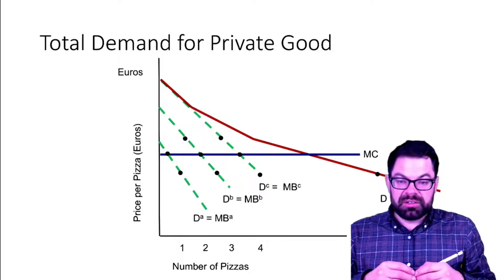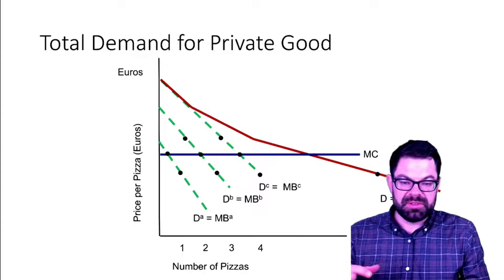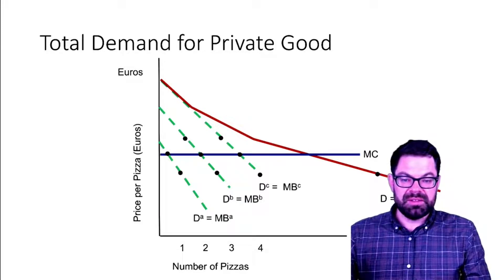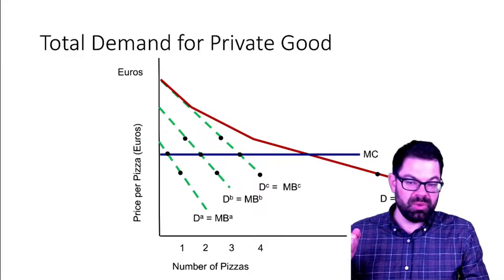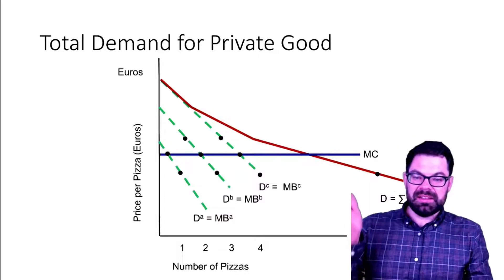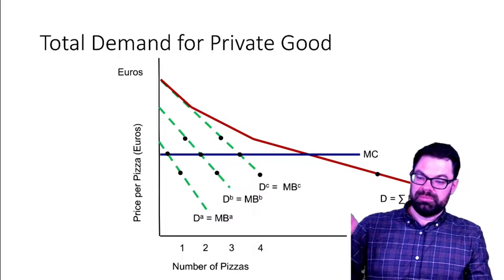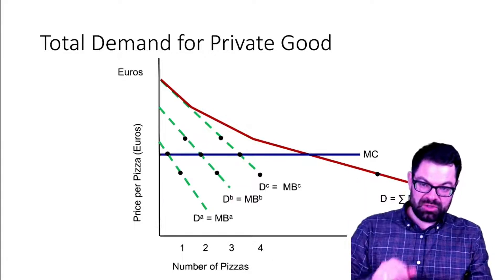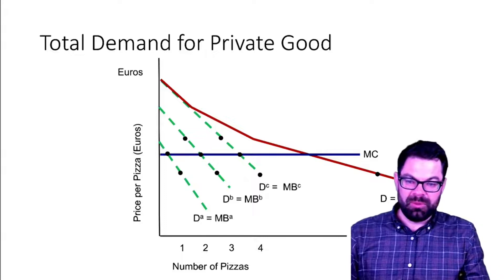Let's start with the total demand for a private good. The example here is pizzas, and demand for a private good is derived by horizontal aggregation. How does horizontal aggregation work? We take the demand curve of each consumer — how much would each consumer consume at a given price — and then we vary the price for each consumer. That's the demand curve for each consumer, and we aggregate that horizontally for all consumers.